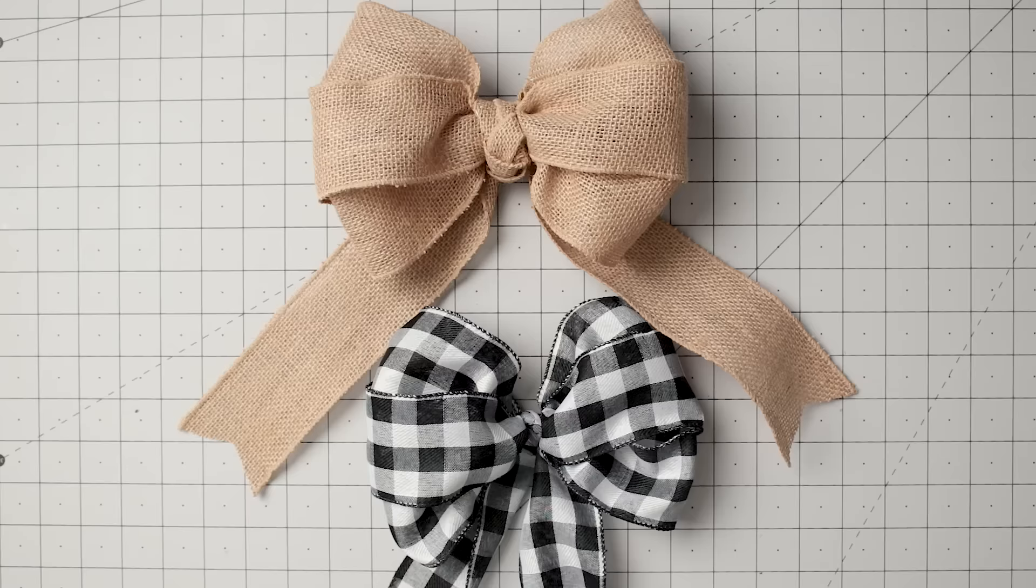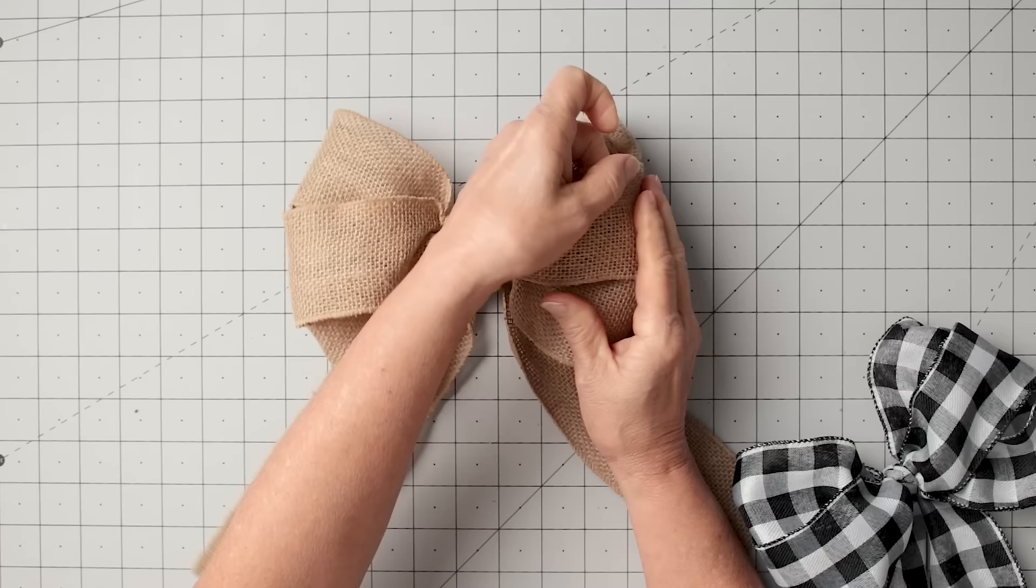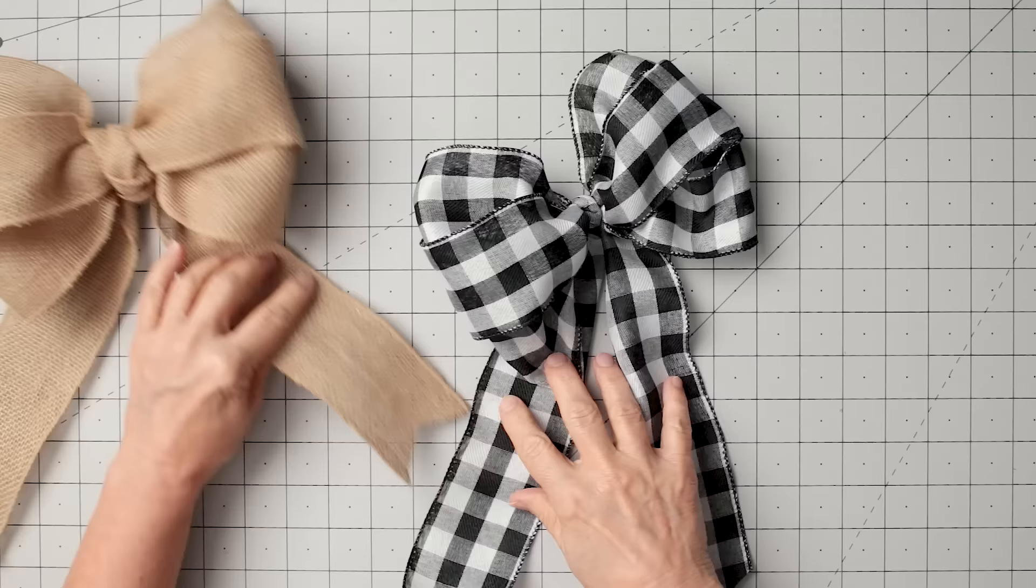All right, we've got our easy no-fail bow. I wanted to show you the two different kinds of ribbon. The burlap is a little stiffer and you get a different look. It's a little harder to get it fluffed. Once it's there, it's pretty stiff. And in the back, you want to leave this part long if you're going to tie it to a wreath or something. If not, you can just cut it right off.